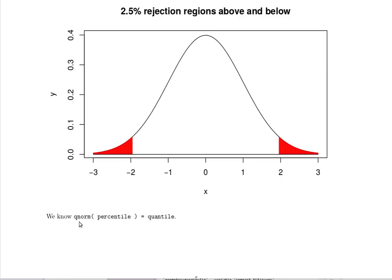We know that qnorm of a percentile is equal to a quantile. Therefore if we know this probability, which we do, it's 0.025, then we can find this quantile with the qnorm. So therefore the lower bound can be found as the qnorm of 0.025. So this one is easy to find.